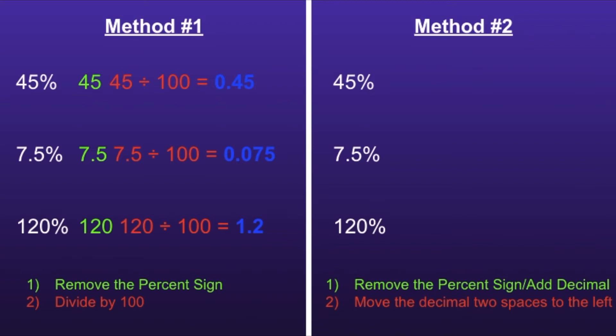Now on to method number 2. Method number 2 also has two steps. There's only one slight difference in the first step. Step 1 is to remove the percent sign and add a decimal.